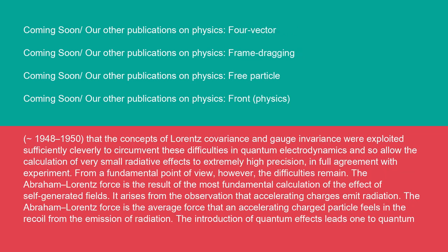It is one of the triumphs of comparatively recent years, 1948 to 1950, that the concepts of Lorentz covariance and gauge invariance were exploited sufficiently cleverly to circumvent these difficulties in quantum electrodynamics and so allow the calculation of very small radiative effects to extremely high precision in full agreement with experiment. From a fundamental point of view, however, the difficulties remain.